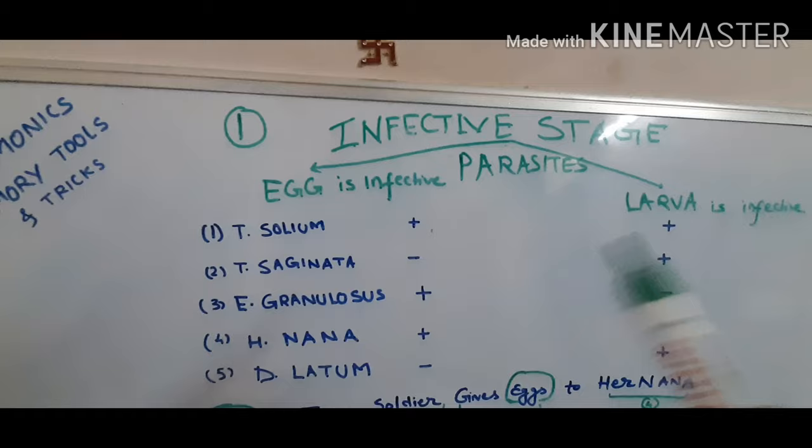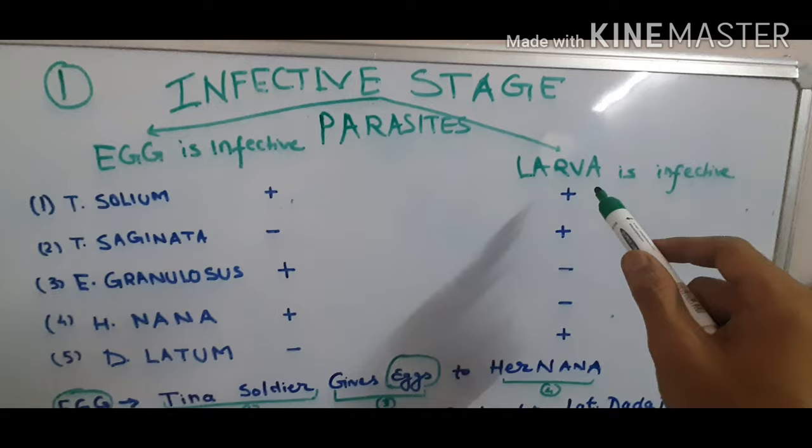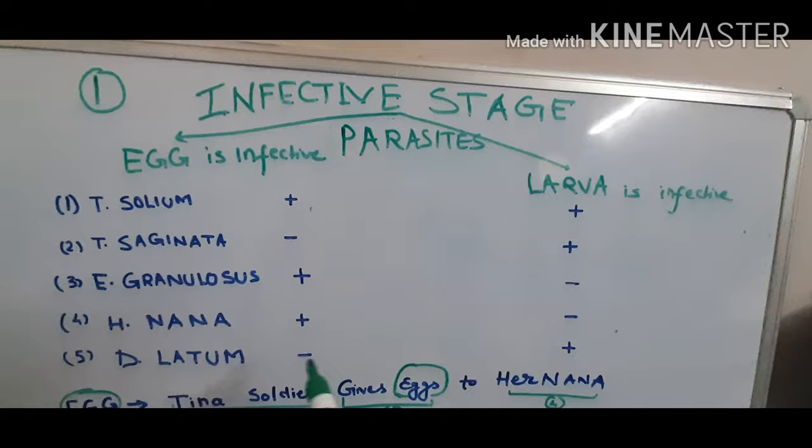The egg is the infective stage in Taenia solium, Echinococcus granulosus, and H. Nana. Larva is the infective stage in Taenia solium, Taenia saginata, and D. Latum. This is very confusing, so we will use a mnemonic to remember it.